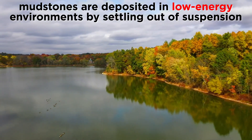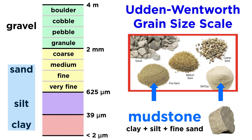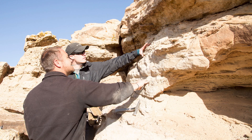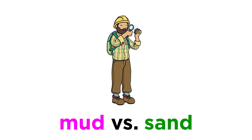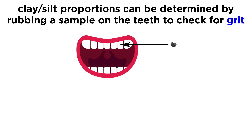At the other end of the spectrum are mudstones, which can only be deposited in low-energy environments where fine-grained sediments are able to settle out of suspension. The largest mudstone deposits form in the deep, calm waters of lakes and oceans. It is not uncommon for clay, silt, and fine sand to be simultaneously present in a mudstone, elevating the importance of proper grain size classification. This can be done accurately with a petrographic microscope, though the clay-sized grains will be too small to resolve. Field geologists have a few tricks for determining grain size.